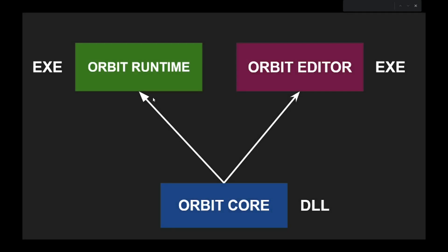Here on my screen you can see a small diagram I made. Our engine is made out of a dynamic link library — a project that when built generates a DLL file, which is linked at runtime. We have the Orbit Editor, which is basically ImGui and all the UI stuff. And we have the Orbit Runtime — that's the part where you want to ship your project; you generate a runtime for it and send that to someone.